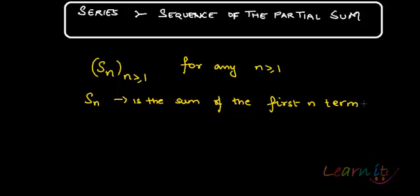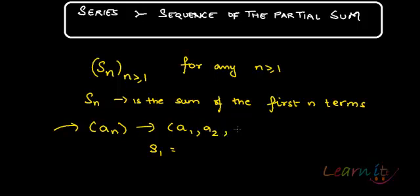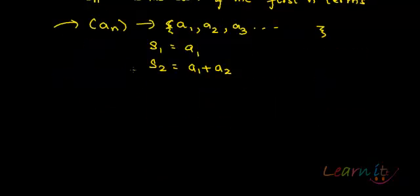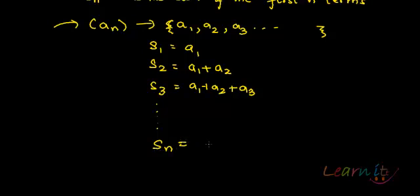What do we mean by that? Essentially, in case Sn has been derived from a sequence An, then S1 — the terms in An will be a1, a2, a3, and so on. So S1 is essentially a1, S2 is essentially a1 plus a2, S3 will be a1 plus a2 plus a3, and so on. So what will be Sn? Sn is the sum of the first n terms — it will be a1 plus a2 plus so on and so forth till An. That will be your Sn term.